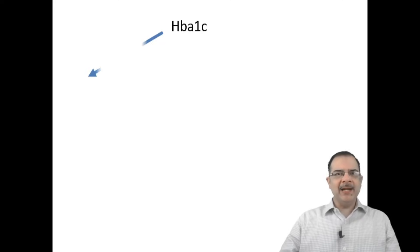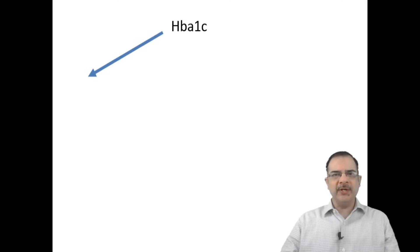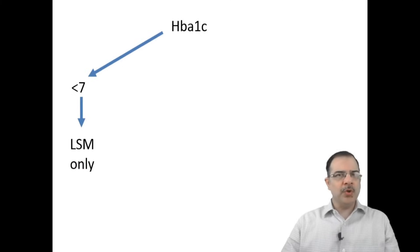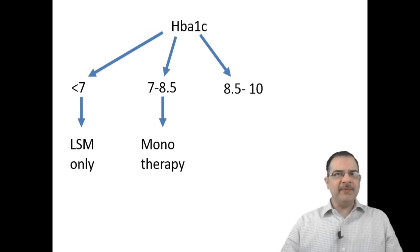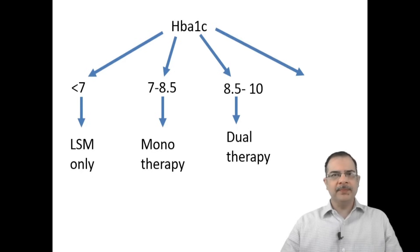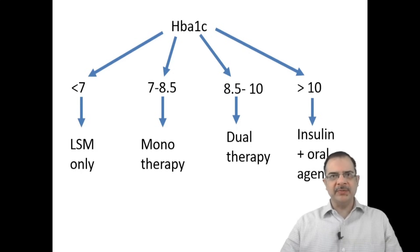Based on the ADA guidelines, depending on the HbA1c level, we can decide whether medicine needs to be started or we can go for lifestyle modification only. If HbA1c is below 7, only lifestyle modification is required — no anti-diabetes medicines are needed. If HbA1c is between 7 to 8.5, start with a single agent. If between 8.5 to 10, start a double agent from different classes of oral agents. If more than 10, insulin should be started along with oral agents. There is a separate video on how to initiate insulin in type 2 diabetes patients.